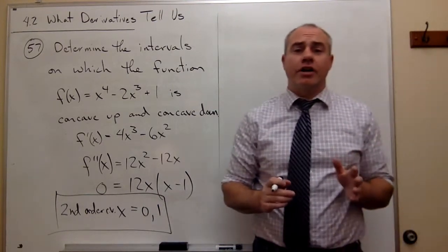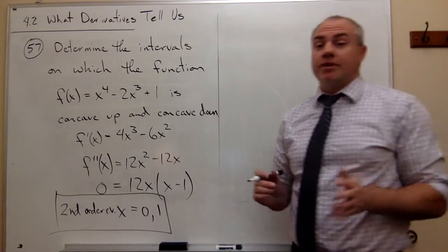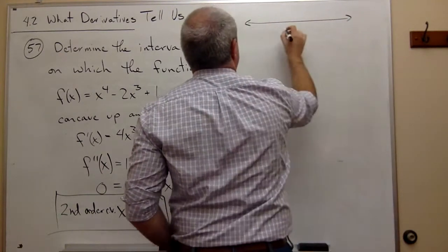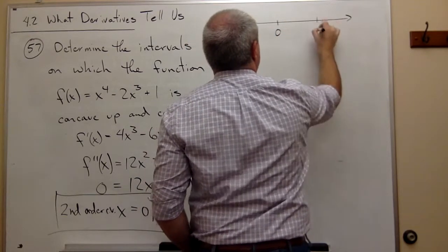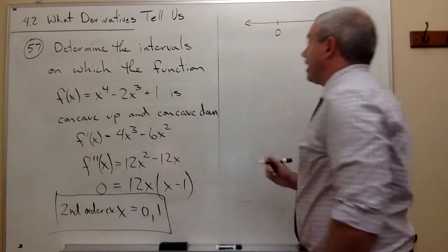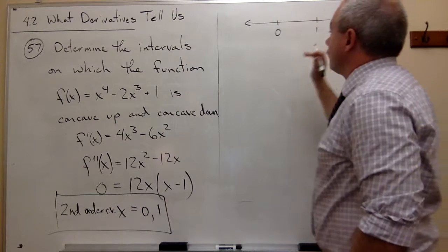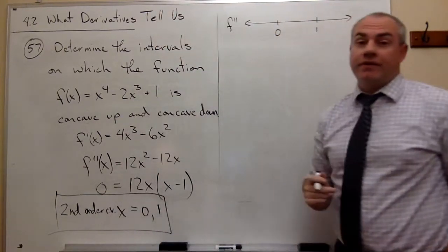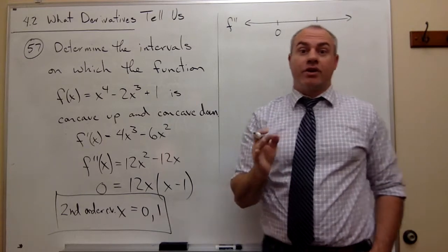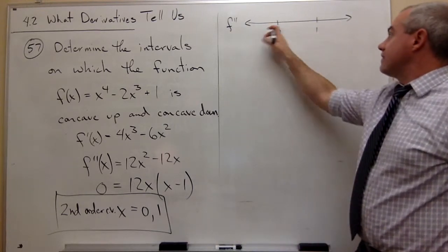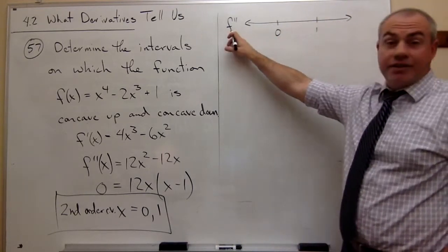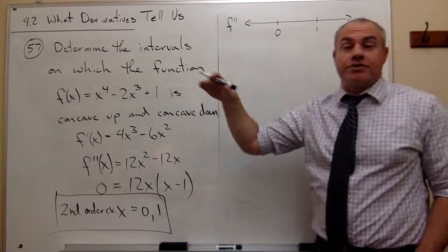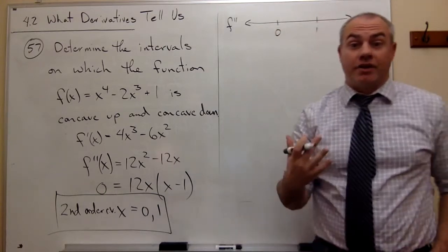Now that I have these second order critical values, let's put them on a number line. I've got 0 and 1 to place on the number line, and now I need to test points. Remember, this is the second derivative, not the first derivative. So I'm going to be plugging these test values into the second derivative, not the first derivative or the original function.